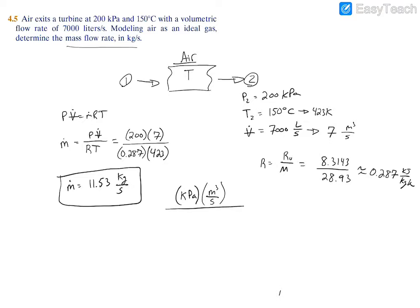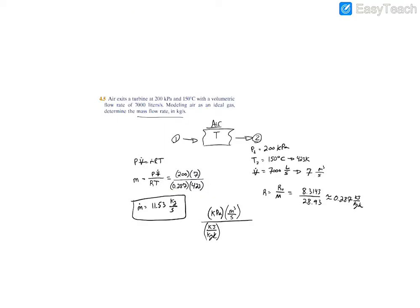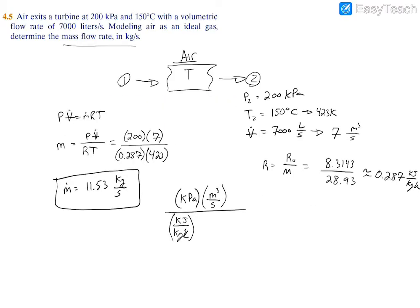And then on the bottom we have that 0.287 which holds the unit of kilojoules per kilogram kelvin, and then that's multiplied by the temperature which is just simply kelvin.